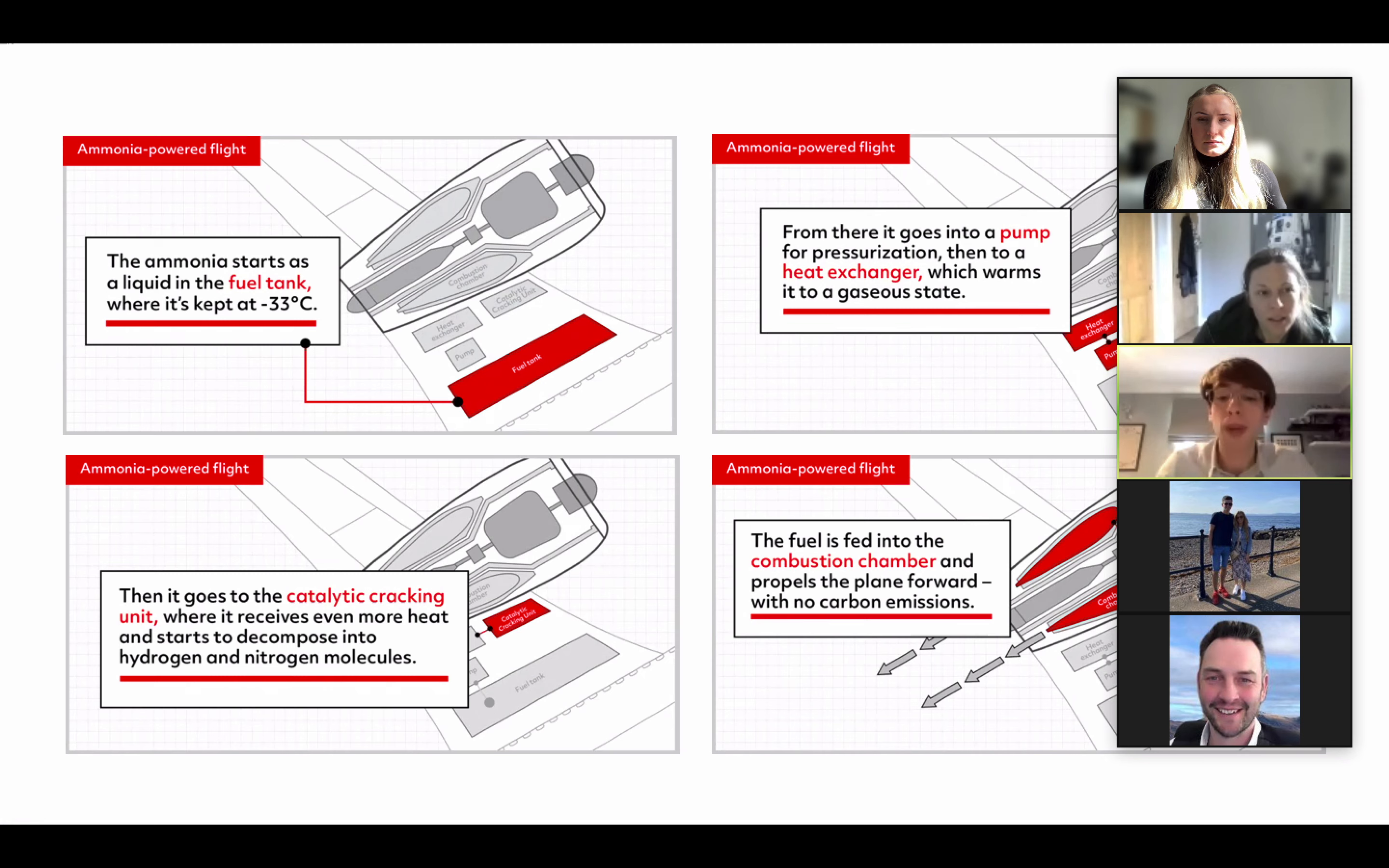The reason ammonia is arguably a better fuel for aviation than hydrogen is because ammonia is much easier to be stored as a liquid. So for example, ammonia only needs to stay around minus 33 degrees Celsius at cruising altitude, whereas hydrogen must be refrigerated at around minus 253 degrees Celsius in liquid form.